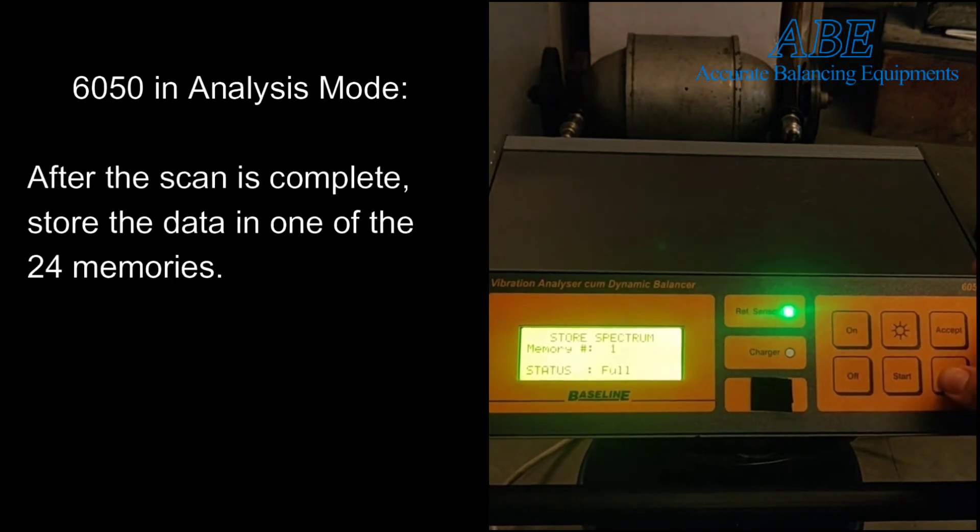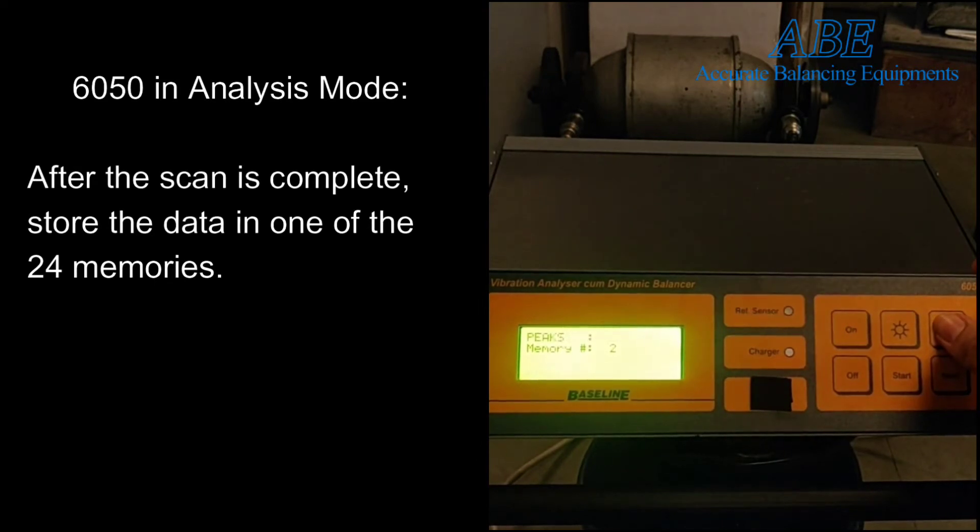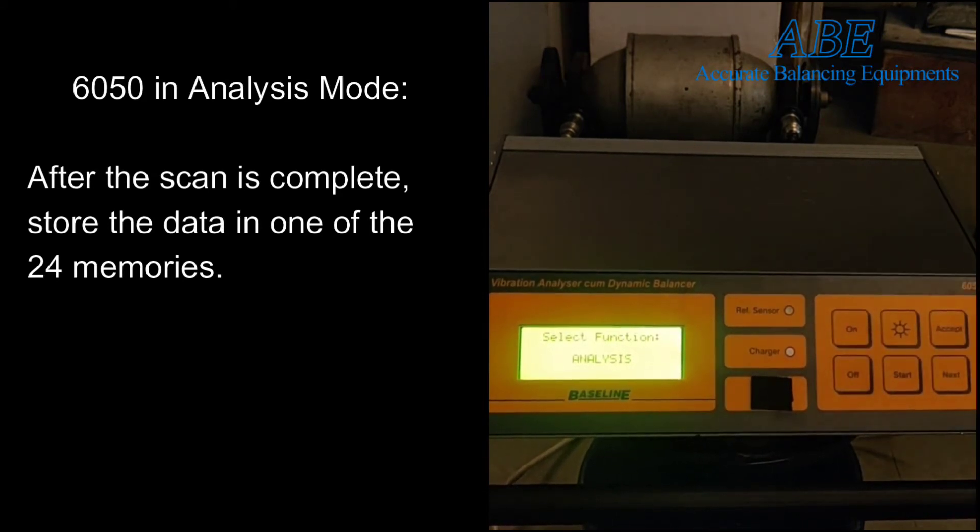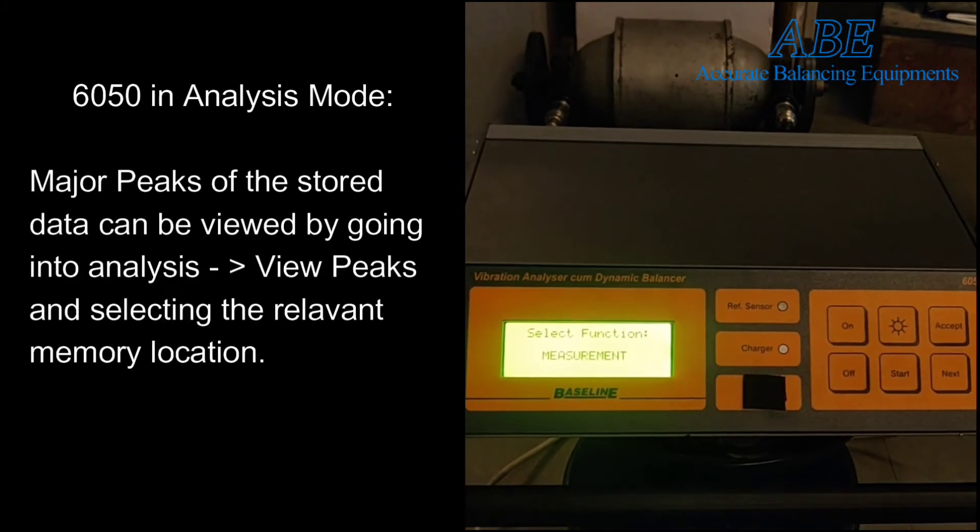At the end of the scanning process, the unit would ask that the scan data be stored under some free memory. There are 24 memories and you may store data in any memory of your choice. The memory number under which a spectrum is stored will be used to relate it to the actual location while analyzing the data.